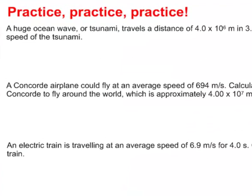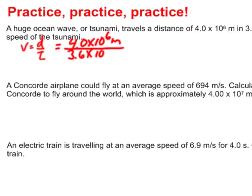Well, once again we would use our equation that speed is equal to the distance divided by the time. We would then put in our values that we have. For distance we have 4.0 times 10 to the 6 meters and for time we have 3.6 times 10 to the 4th seconds, and we need to do a little bit of math on that.